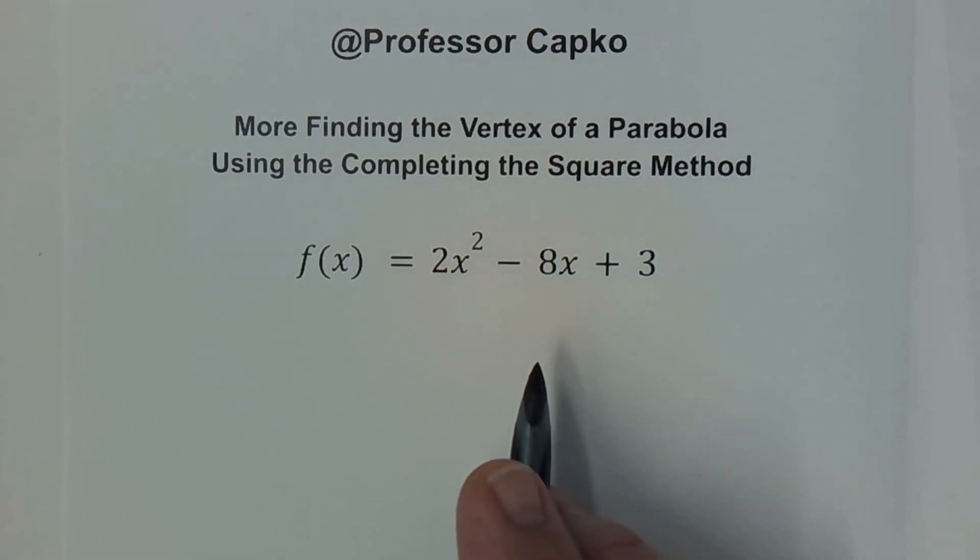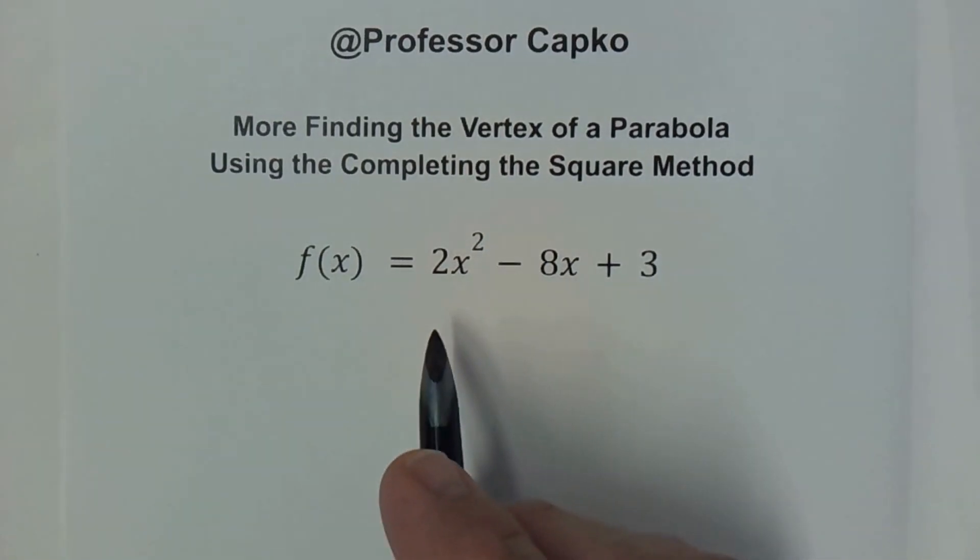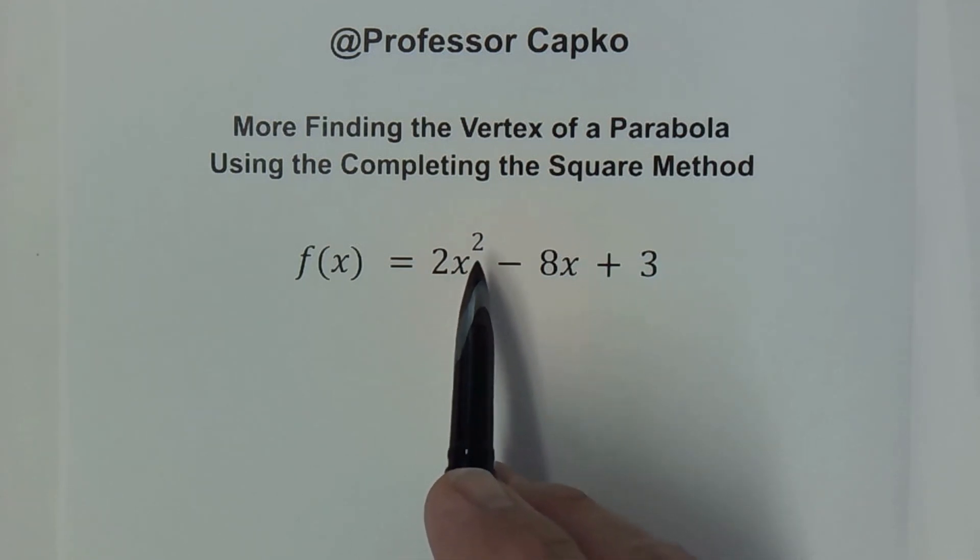Hello everyone. In a prior video I showed you how to find the vertex of a parabola using the completing the square method, but in that video the coefficient in front of the x squared term was a 1. Today we're going to kick it up a notch and do it when there is something other than a 1 as the coefficient of your squared term.